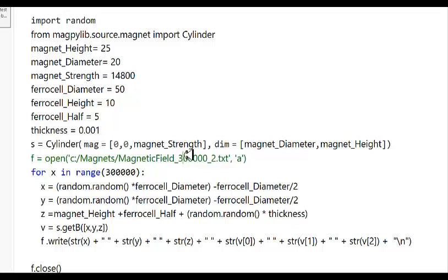I'm generating 300,000 magnetic moments to simulate the ferrocell. The nanoparticles are quite small, and I'm sure there are hundreds of thousands if not millions of nanoparticles between the two pieces of glass. I'm trying to get as many magnetic moments as I can into my model to get as close to reality as possible. I choose random locations XYZ around the magnet and pass that into a function called get B, which means get the magnetic field, and I'm going to write that all to the file.